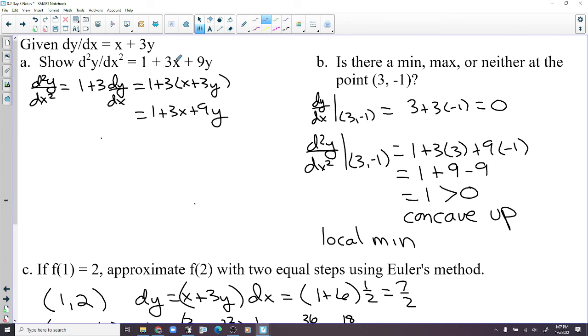Show that the derivative is 1 plus 3x plus 9x. So we have the derivative of x is 1. The derivative of 3y is 3, but then dy dx. We put dy dx in for that. Distribute, and we get what they wanted. Is there a min, max, or neither at the point 3, negative 1? So if we evaluate the first derivative at 3, negative 1, we get 0, which means there's a potential minimum or maximum.